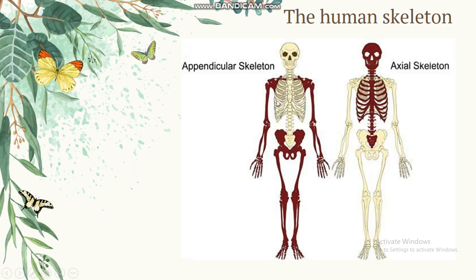The human appendicular skeleton consists of the bones of the pectoral shoulder girdle, which means gelang bahu, the upper limbs, which means tulang tangan, the pelvic girdle, which means gelang panggul, and the lower limbs, which means tulang kaki.